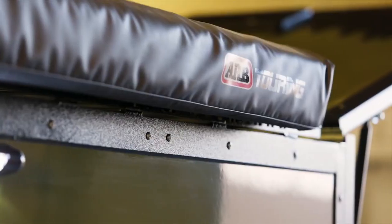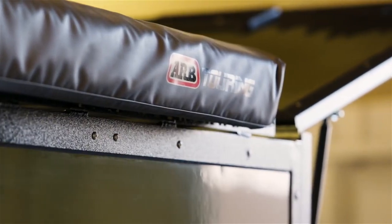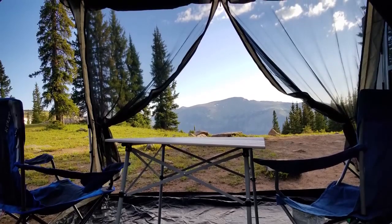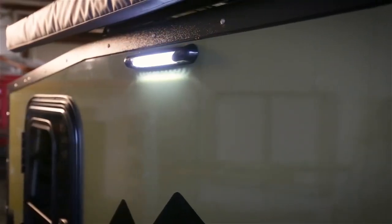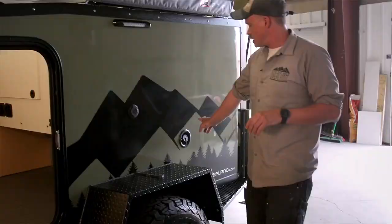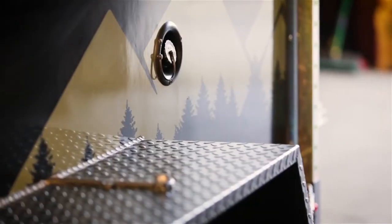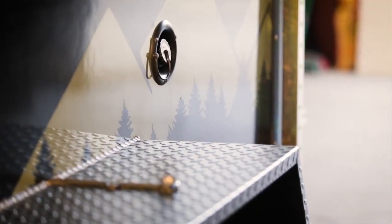As we move back here, we have our ARB awning. It has a great system for adding rooms and enclosures, sleeping more people with it. Right here we have shore power and you've got your LED porch lights. This is your water fill for the 20 gallon onboard tank underneath.